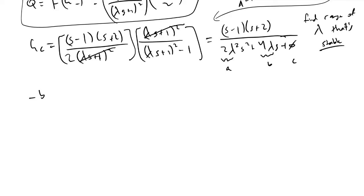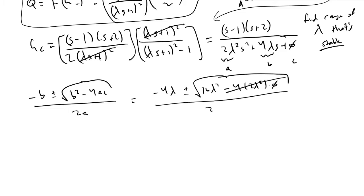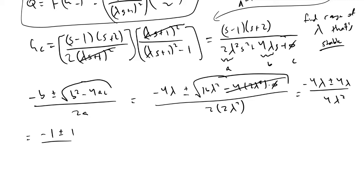We implement the quadratic formula to determine the roots of our denominator, since it's a quadratic equation. Recall: (-B ± √(B²-4AC)) / 2A. This gives (-4λ ± √(16λ² - 4·2λ²·0)) / (2·2λ²). The C term is 0, so that cancels, giving (-4λ ± 4λ) / 4λ², which simplifies to (-1 ± 1) / λ.